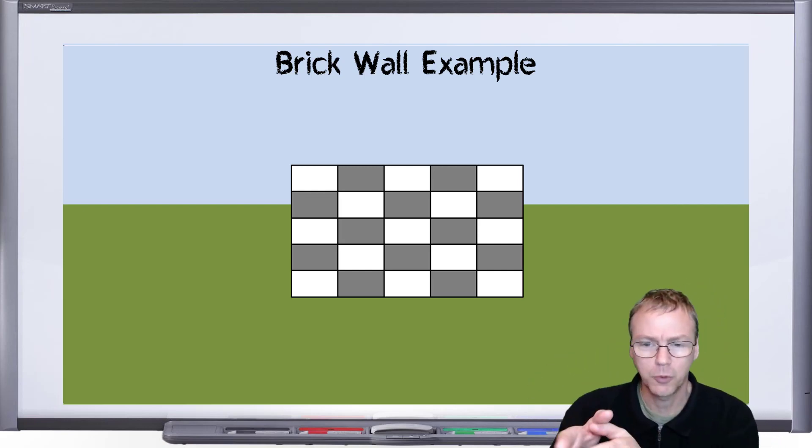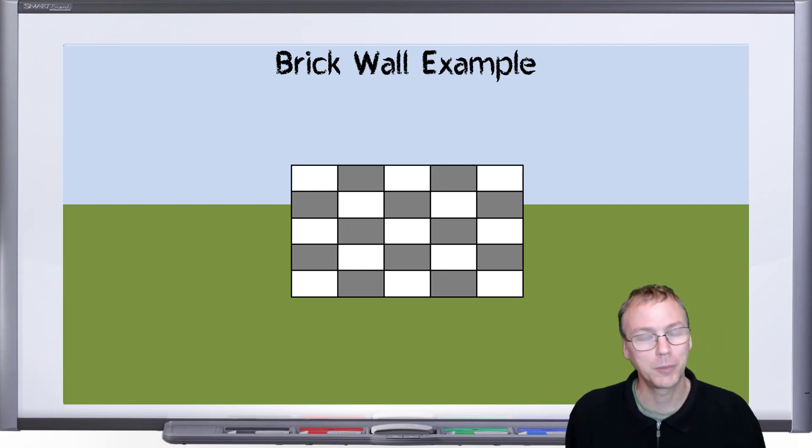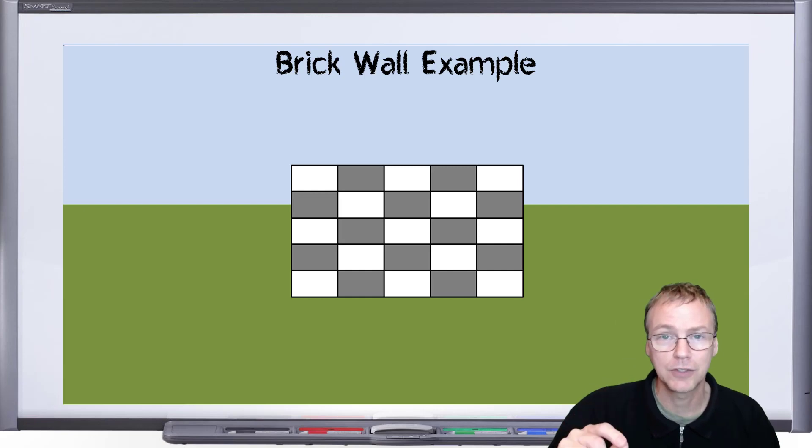Now at this distance, we set up our telescope and we look through it and we can clearly see the individual checkerboards. At this distance, even the mortar line between the bricks is easily resolvable. At this distance, the angular size of each individual brick is well above the Rayleigh criterion.